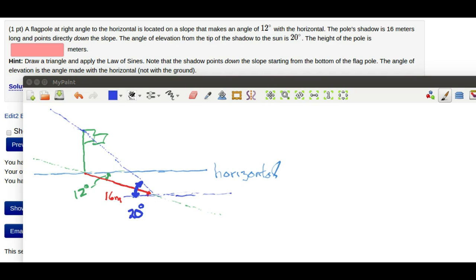We're also told that the elevation of the sun is 20 degrees. So if the sun is up here at an elevation of 20 degrees and it's casting that shadow, then we've got this ray of sunshine coming down here that's producing the shadow. Since we know that the ground is sloped at 12 degrees, then it means that this angle right here is also 12 degrees.